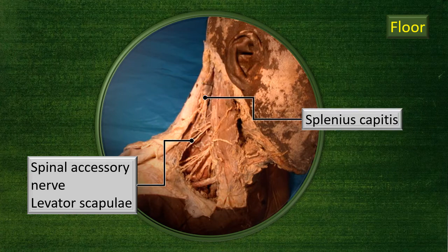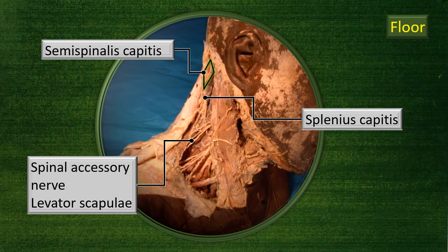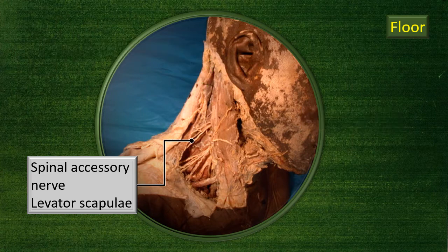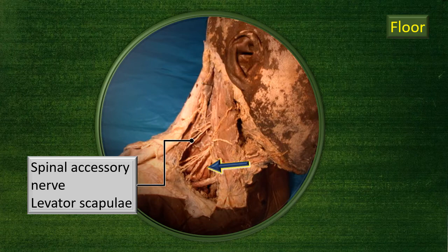Right above the levator scapulae is the large area of the splenius capitis muscle. These are floor muscles of the posterior triangle. Close to the apex, where the sternocleidomastoid and trapezius converge, you can see a small edge of the semispinalis capitis muscle, recognized by its vertically oriented muscle fibers. So three floor muscles identified: levator scapulae, splenius capitis, and semispinalis capitis.